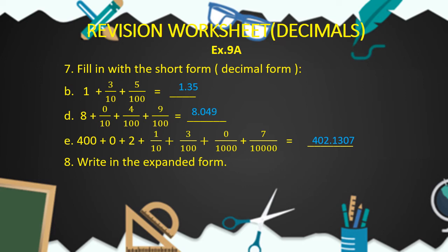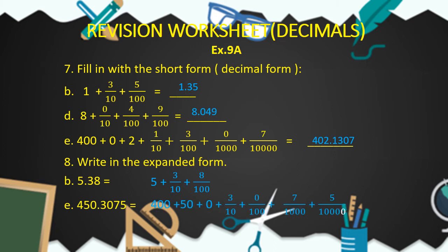Now let's come to question number 8: write in the expanded form. The short form is written and you have to write the expanded form of the following decimal fractions. For part B, 5.38 is equal to 5 plus 3 by 10 plus 8 by 100. For part E, it is equal to 400 plus 50 plus 0 plus 3 by 10 plus 0 by 100 plus 7 by 1000 plus 5 by 10,000.